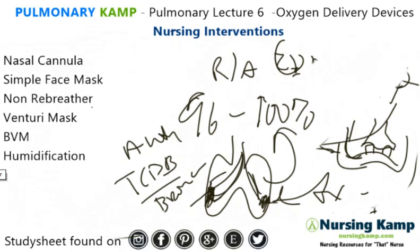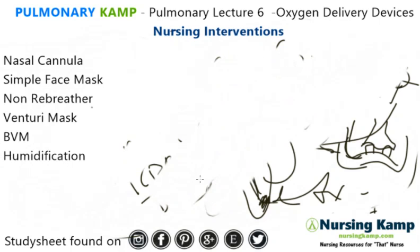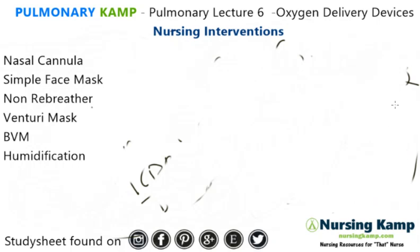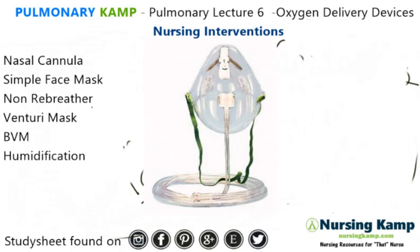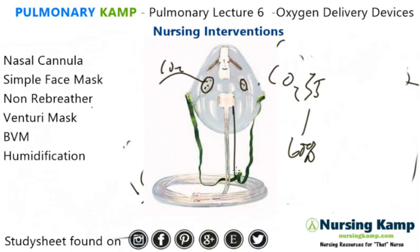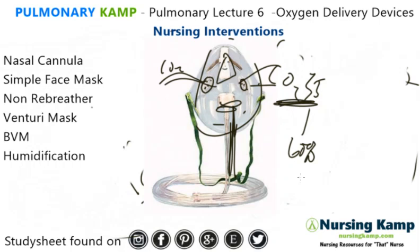The next thing we're going to talk about is a simple face mask. A simple face mask is an oxygen delivery device used in more acute situations. It's not a non-rebreather because it has two wafers called flanges with holes, which allow the patient to exhale CO2. It can deliver oxygen from 35 up to about 60 percent. It goes over the nose and mouth. It's not the ideal situation for COPD patients — nasal cannulas are always ideal for them.